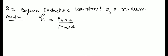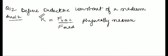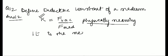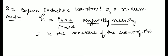It is a mathematical definition, and physically the meaning of the dielectric constant is: it is a measure of the extent of polarization of a dielectric when placed in an electric field.